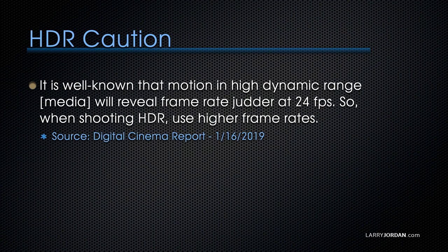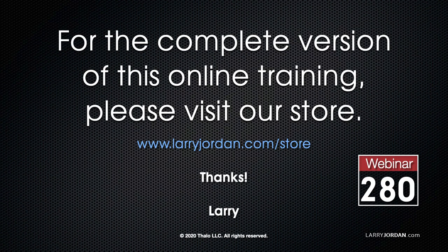One caution: it is well known that motion in high dynamic range media will reveal frame rate shutter when you shoot at 24 frames a second. So when you're shooting HDR, use higher frame rates. This has been an excerpt of a recent Power-Up Webinar on using HDR media in Apple Final Cut Pro 10.